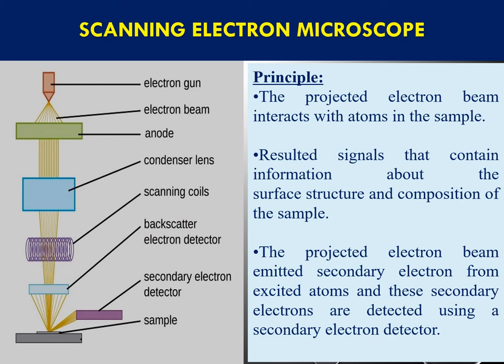This is only a surface phenomenon — the electron beams interact only with the surface atoms. The resulted signals contain information about the surface texture and composition of the sample. The projected electron beam emits secondary electrons from excited atoms. The first electron beam we pass is called the primary electron source, and when it interacts with the surface atoms, it emits secondary electrons. These secondary electrons have details of the surface and can be detected by the detector to give a final image of the material.